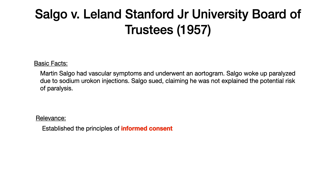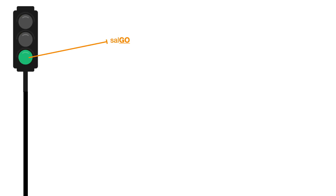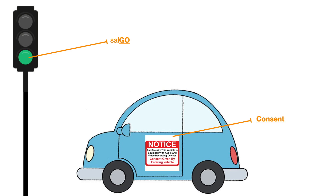Salgo reminds me of 'go,' like the green light on a traffic light. Here we have a vehicle with a consent or notice sticker on the side of the vehicle. The association is Salgo, go, traffic — the car has consent on it. So Salgo involved informed consent. I know it's silly, but if it helps you memorize the case, then it's pretty useful.